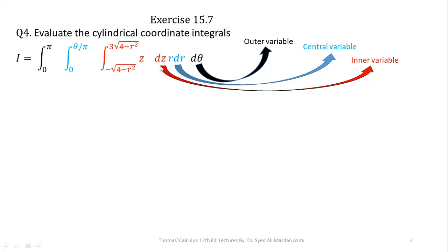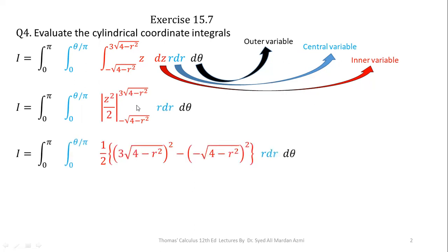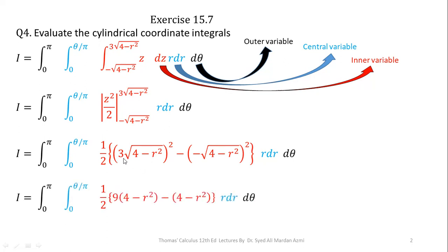We first integrate with respect to Z. The integration of Z is Z squared over 2 using the power formula. In the next step, we apply the limits using the fundamental theorem of calculus. We take 1 over 2 outside and apply the limits. For the upper limit, Z is replaced with 3 times the square root of (4 minus R squared), and for the lower limit, Z is replaced with minus the square root of (4 minus R squared). We compute upper limit minus lower limit.